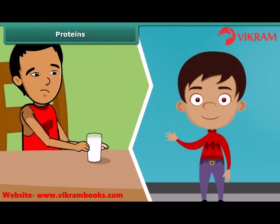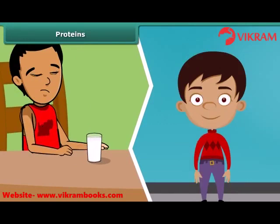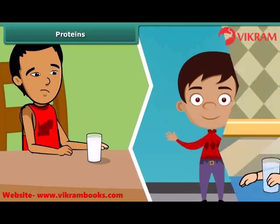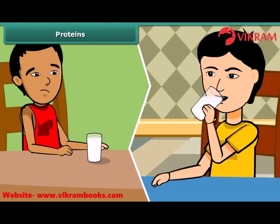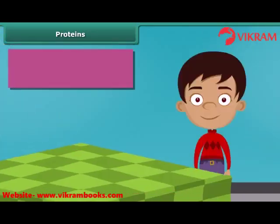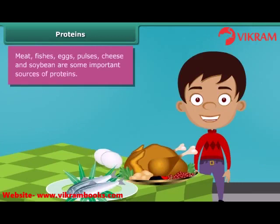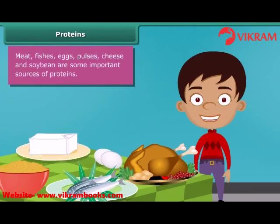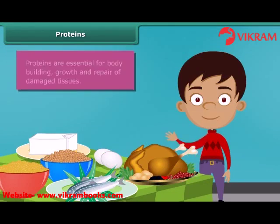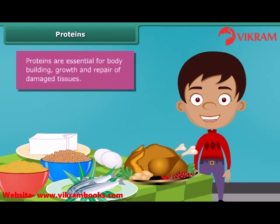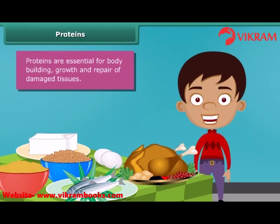You might have noticed that some children who do not drink milk become weak and underdeveloped, because milk contains required proteins for our growth. Meat, fish, eggs, pulses, cheese, and soybean are some other important sources of proteins in our diet. The major role of proteins is building and repairing of damaged tissues. Along with carbohydrates, they are also a source of energy.